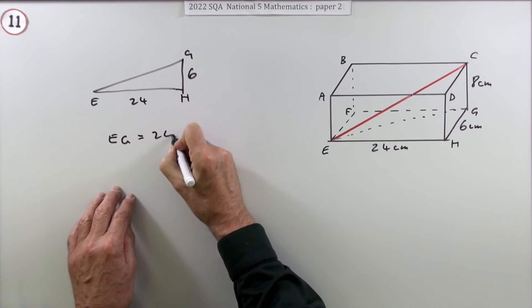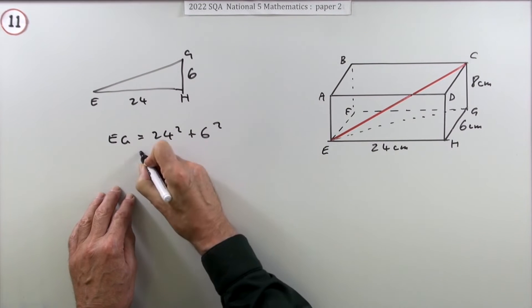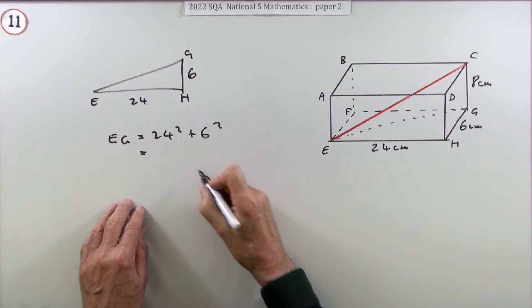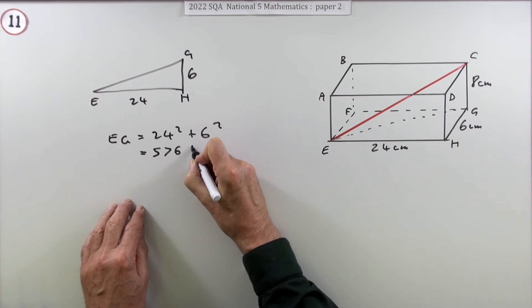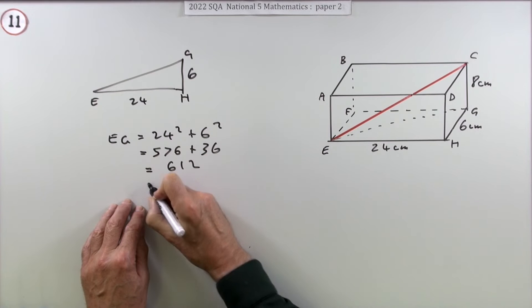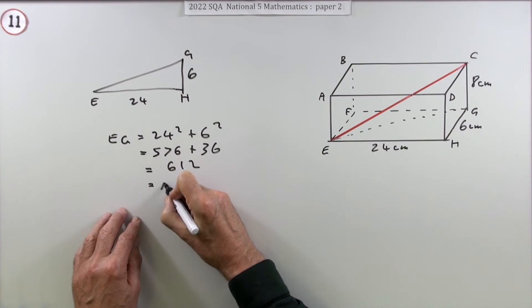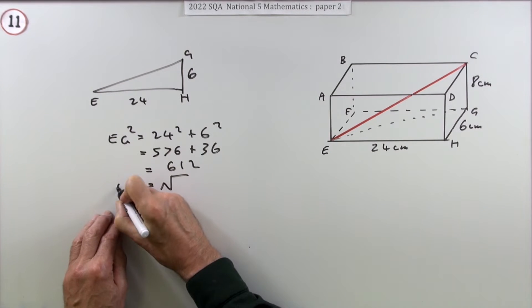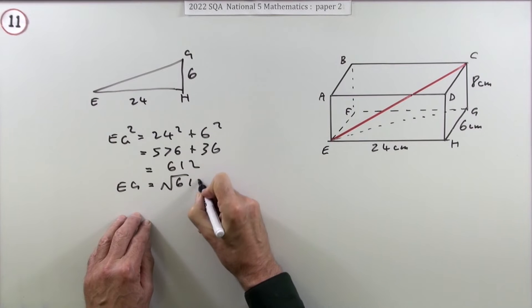You could say, well, EG is going to be 24 squared plus 6 squared, and then just carry on with that: 576 plus 36, which is 612. That's EG squared, of course. Then get the square root of 612, which is 24.738 and so on.